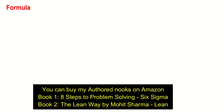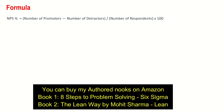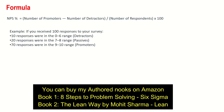Let us understand the formula. NPS percentage is calculated as: number of promoters minus number of detractors, divided by total number of respondents, multiplied by 100. For example, if we received 100 responses to a survey, 10 were detractors, 20 were neutral, and 70 were promoters, then the NPS percentage will be (70 minus 10) divided by 100, into 100, which equals 60%. I hope this clarifies what NPS is and how it is calculated.